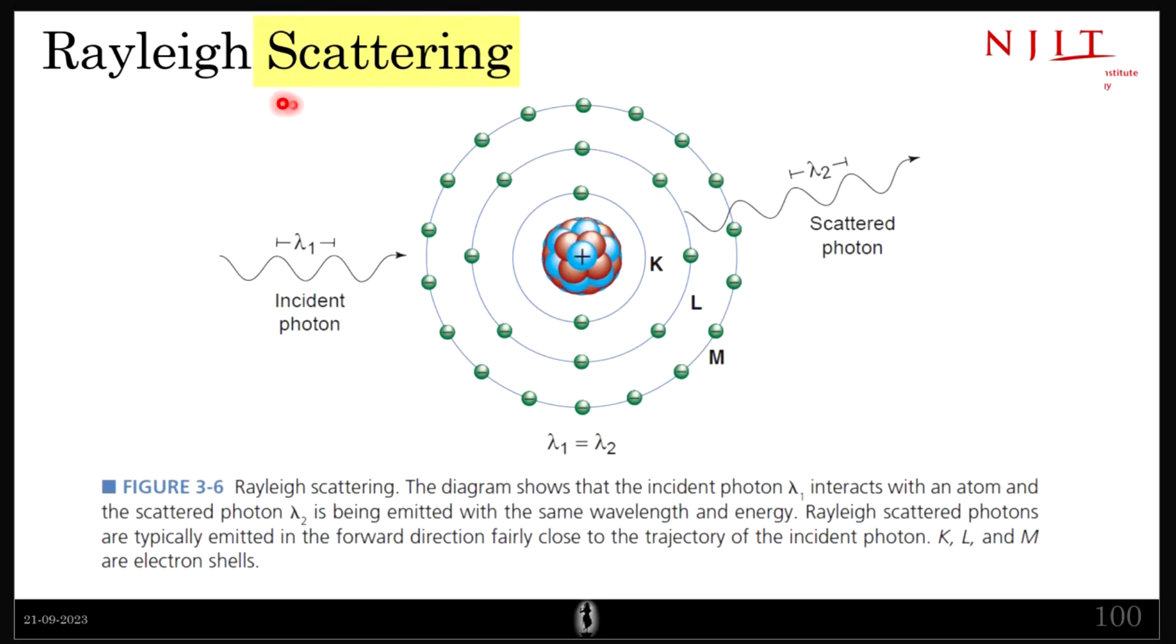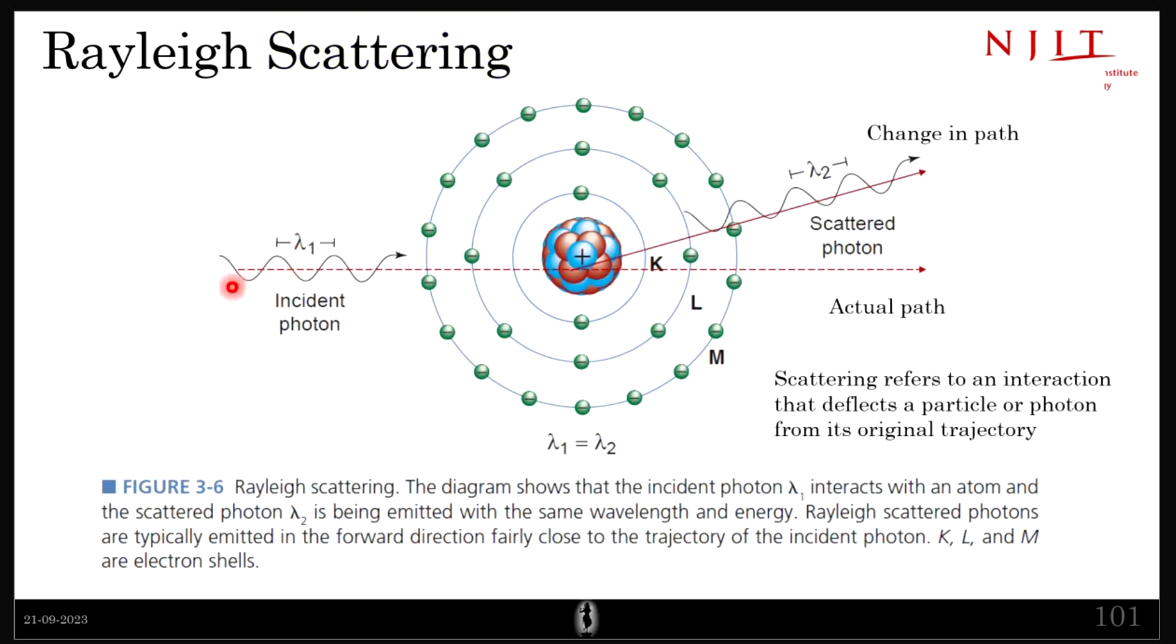Let me just focus a little while on what is scattering. Scattering is when the path of a photon changes. Ideally, this photon should have gone in this path. This would have been its actual path. But because it is interacting with the atom, it changed its path and now it is going with this direction. There is a change in path and whenever there is a change in path, that is called scattering. Scattering refers to an interaction that deflects a particle or photon from its original trajectory.